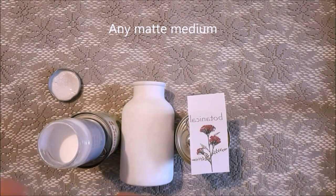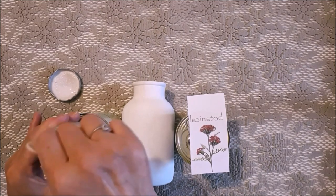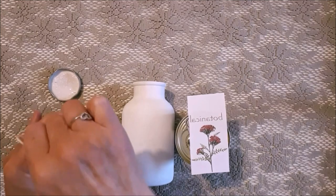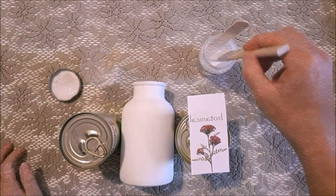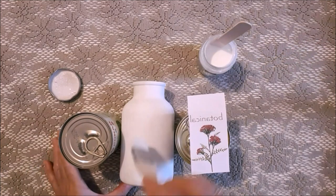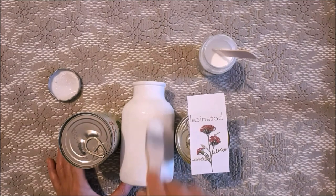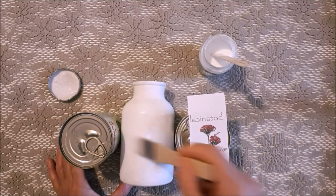What you need to do is take your matte medium and give it a good stir. Once you've done that, you brush on the matte medium where you want to place your image, whether it be all over your object or just in one little position. Make sure you coat it really well.